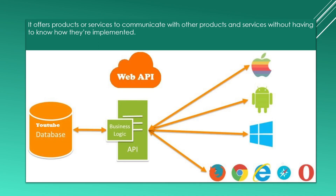The user does not have any idea how the data is coming and how the video was played on a single click. As we know, all data is stored in a database, which means YouTube videos are also stored somewhere in the YouTube database. With the help of an API, a user's browser communicates to the YouTube database.